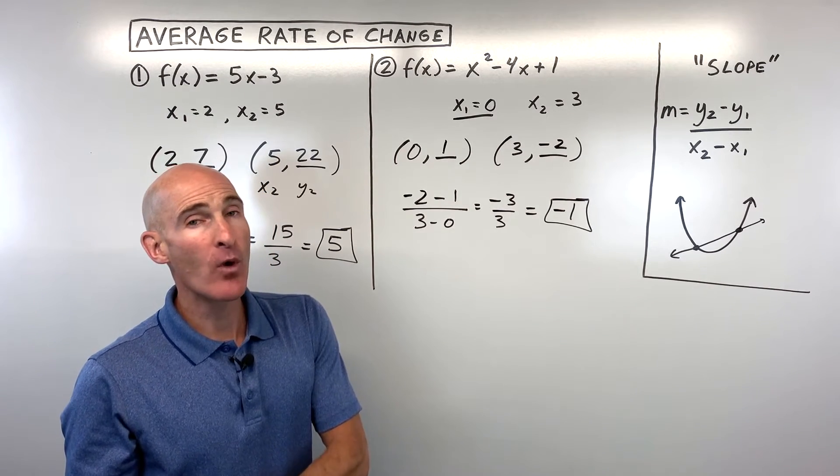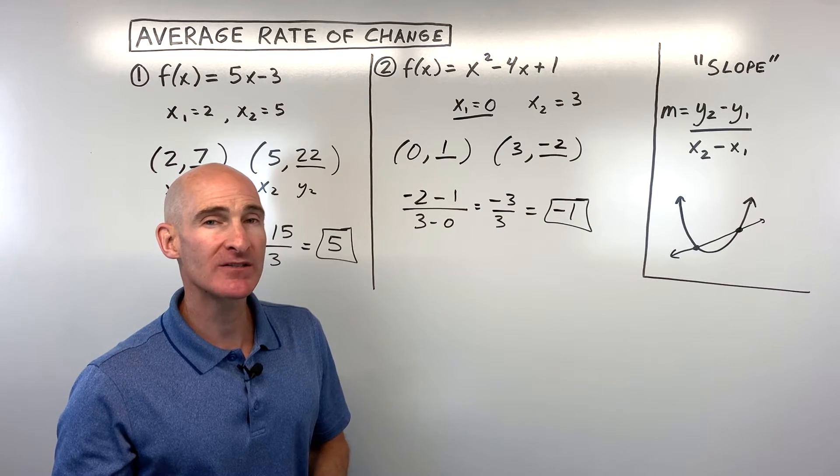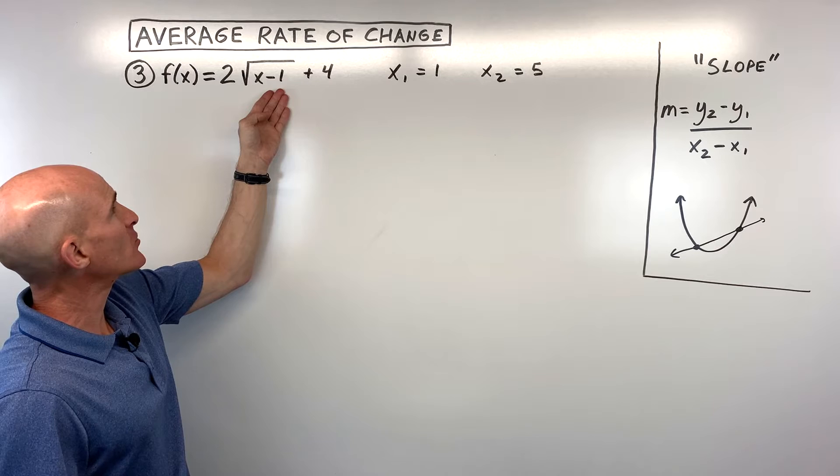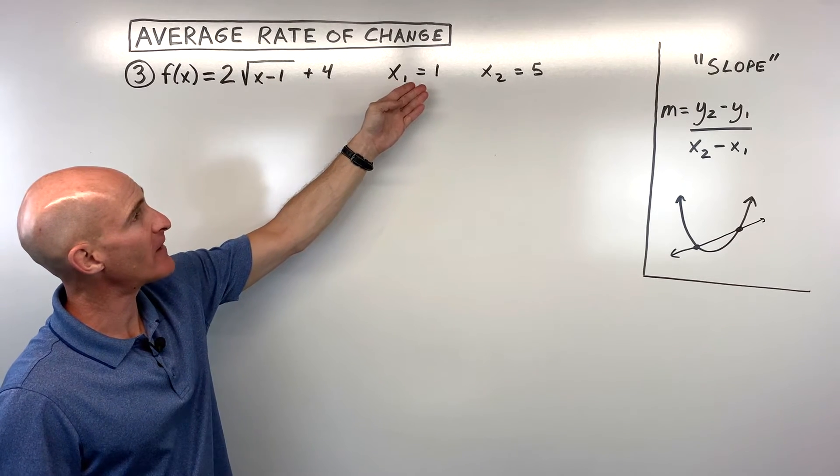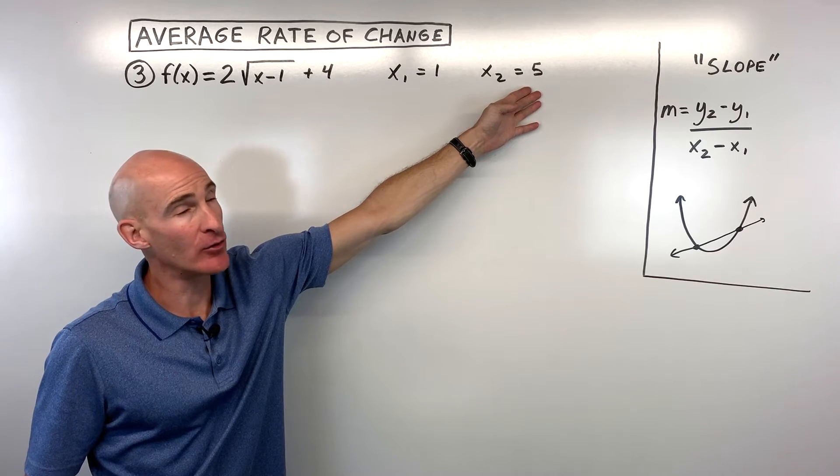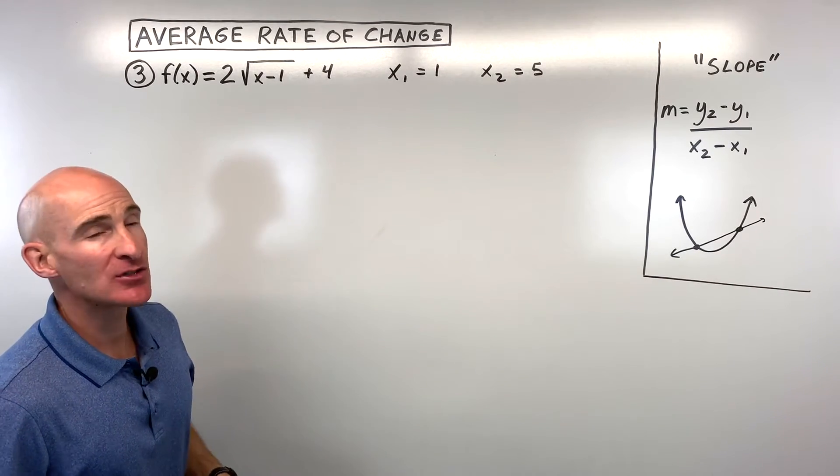Let's take a look at one more example. See if you can try this one on your own. Go ahead and pause the video. So we have f of x equals 2 times the square root of x minus 1 plus 4, and we want to find the average rate of change from 1 to our x value of 5.